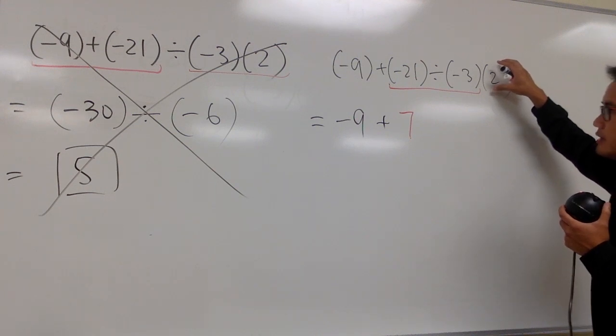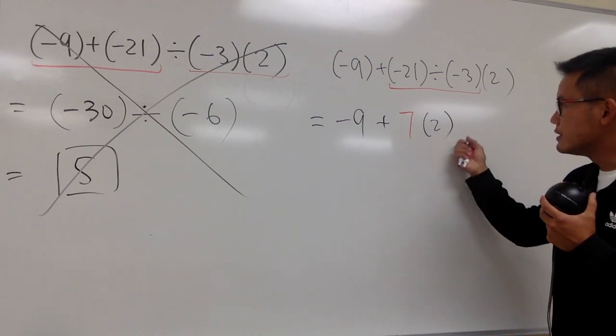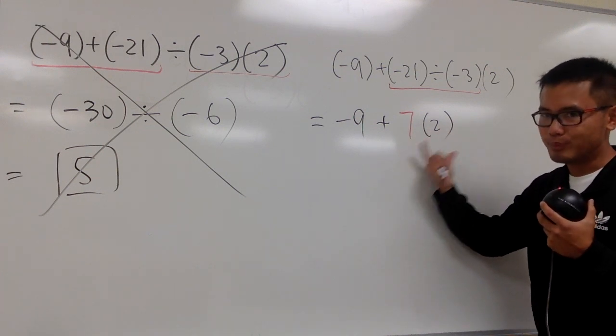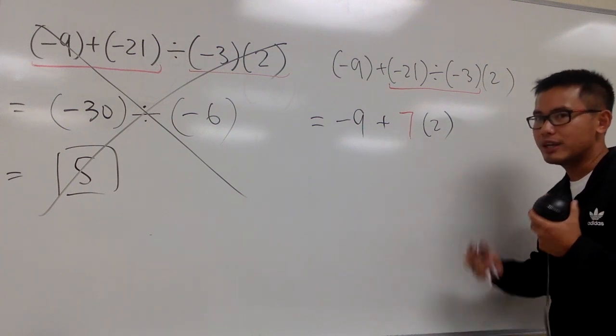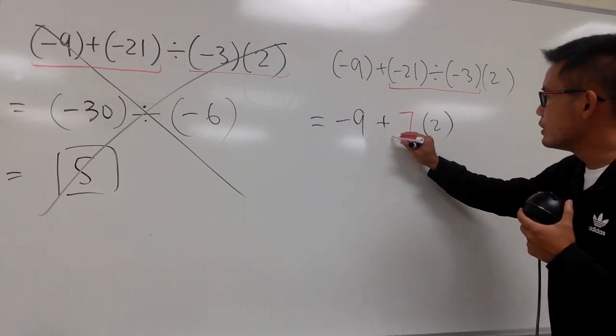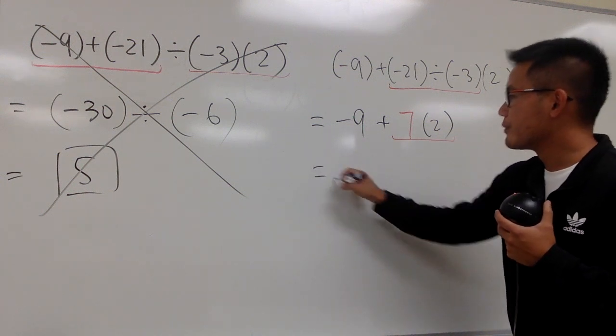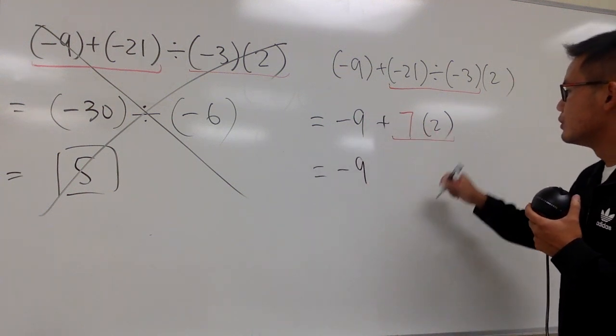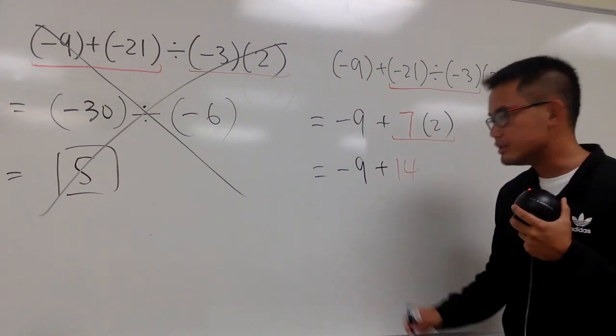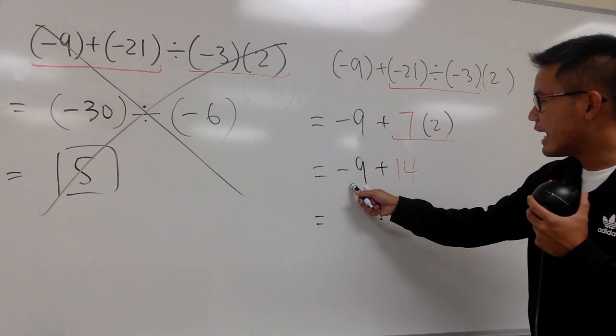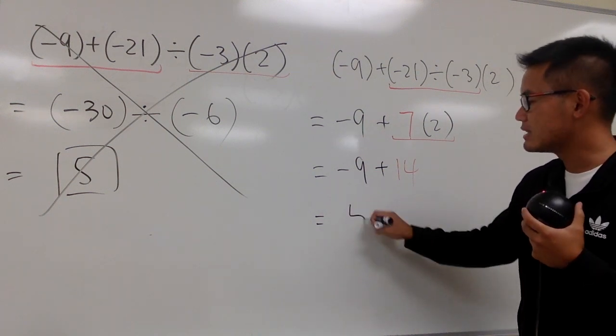We write it down like this: 7, parentheses 2. This means we have to multiply. And we multiply before we add anything or subtract anything. So the next thing we will do is 7 times 2. So I will keep the negative 9. 7 times 2 is 14. And of course, we have to add them together. As you can see at the end, negative 9 plus positive 14 is positive 5.